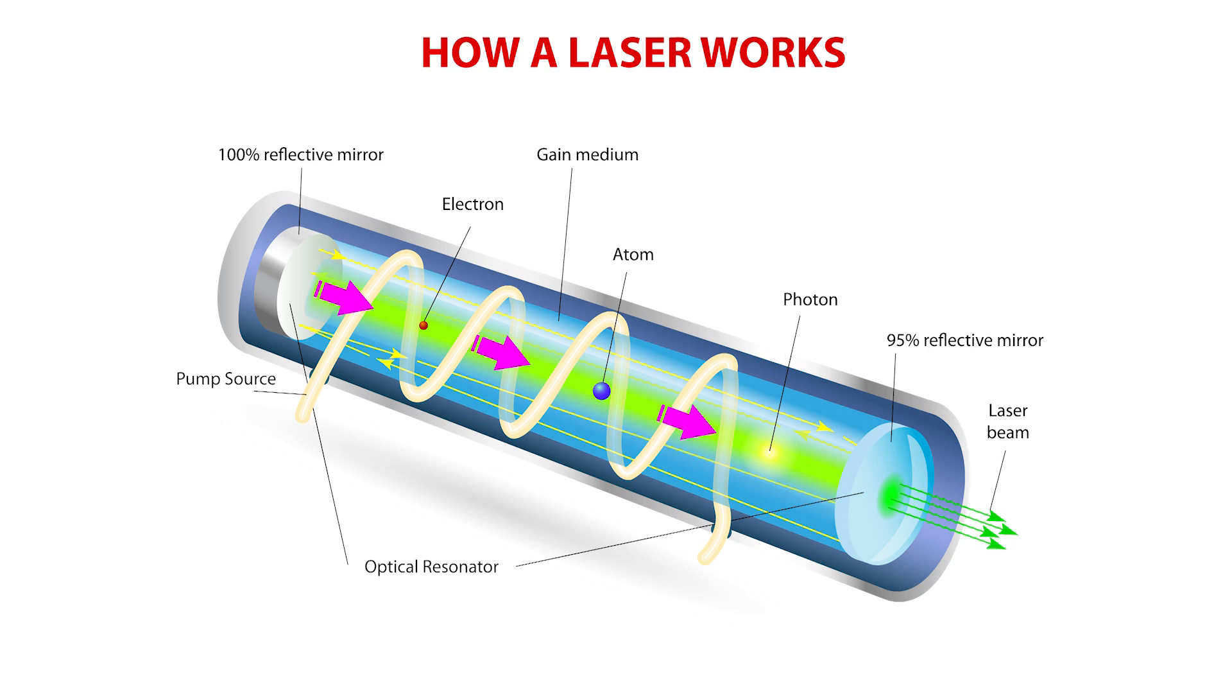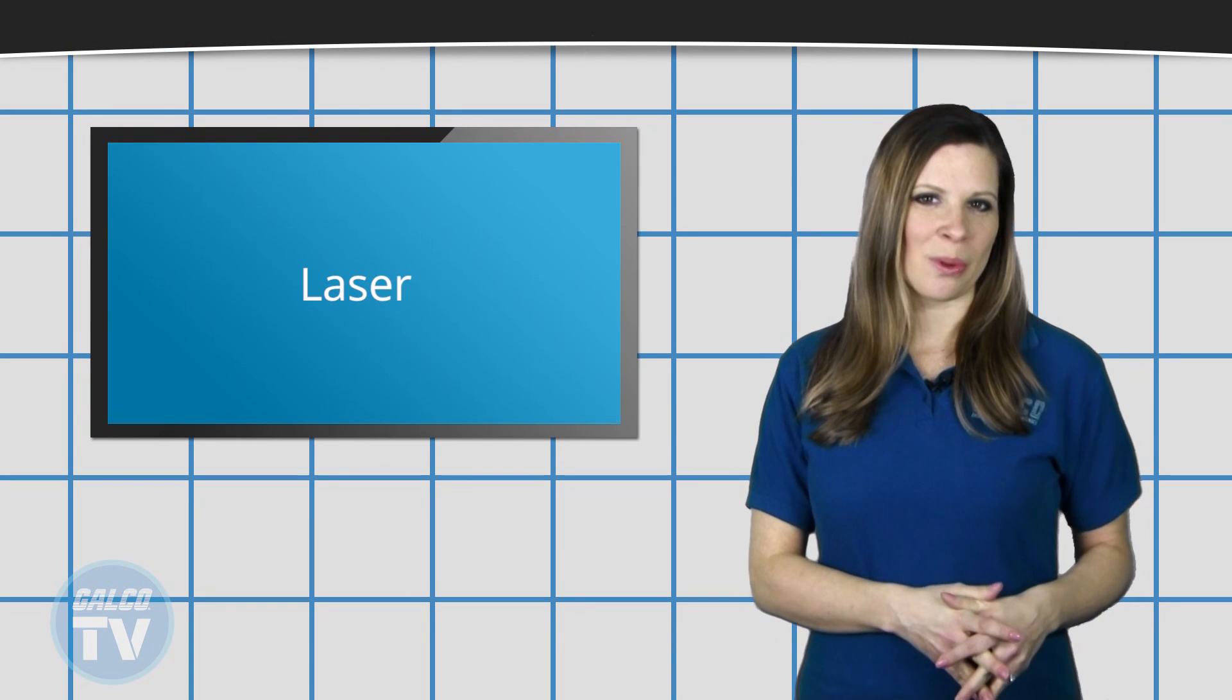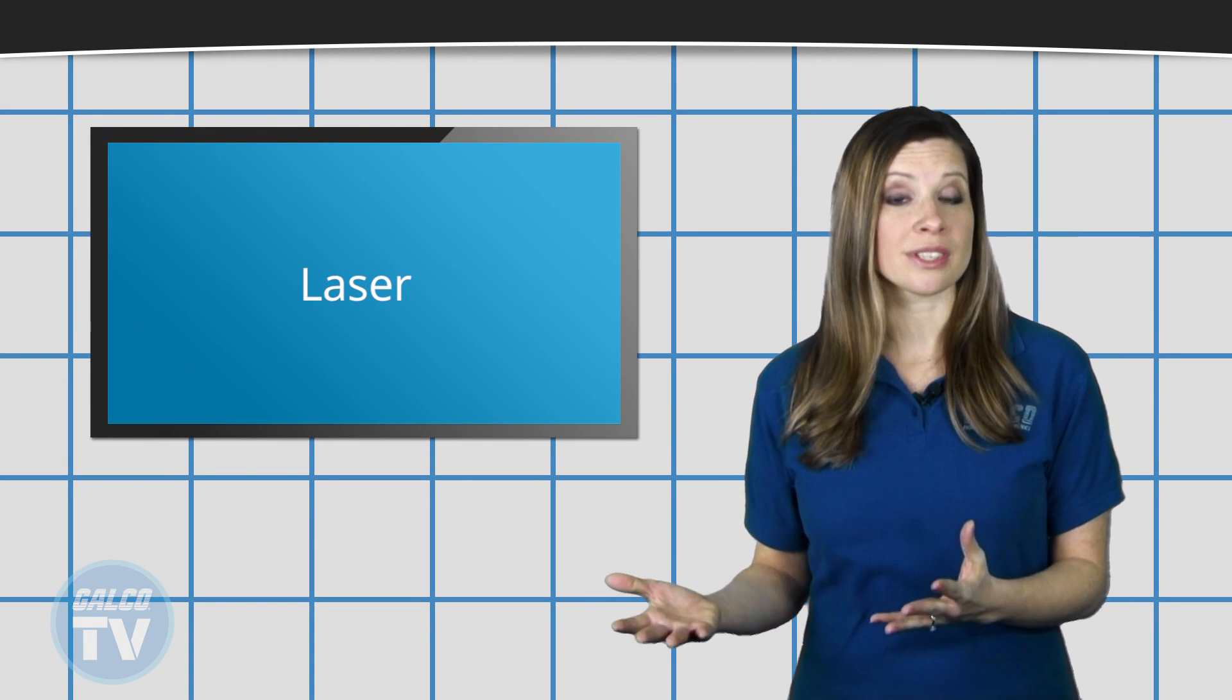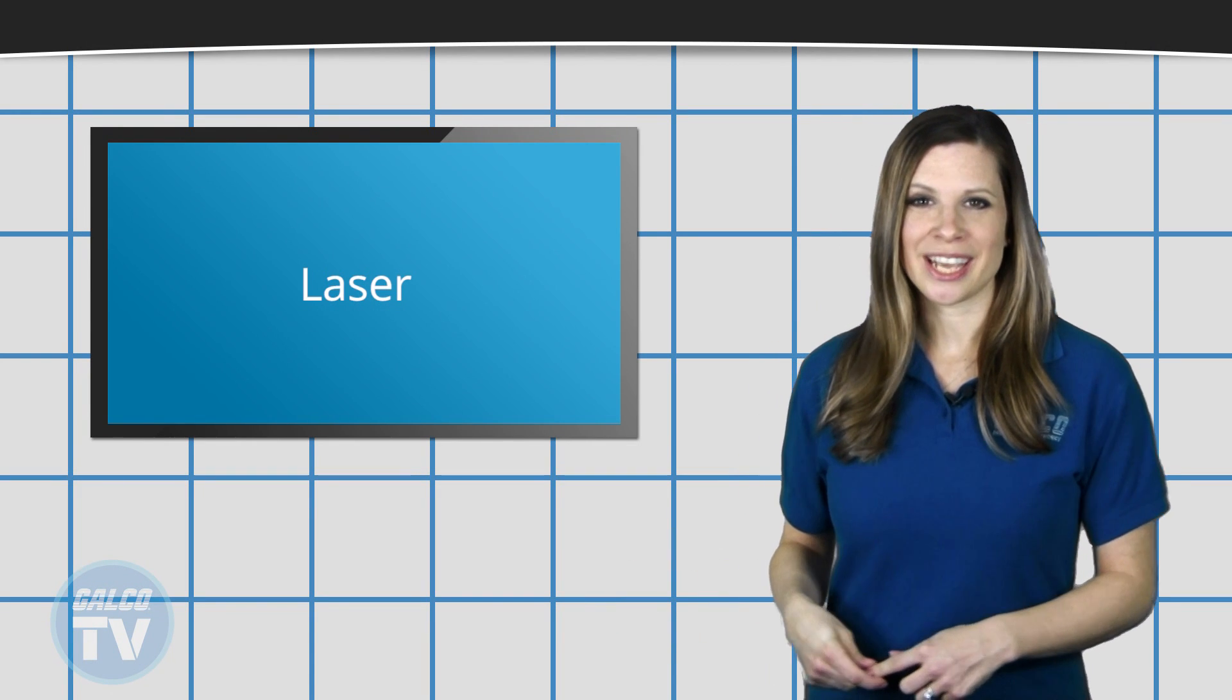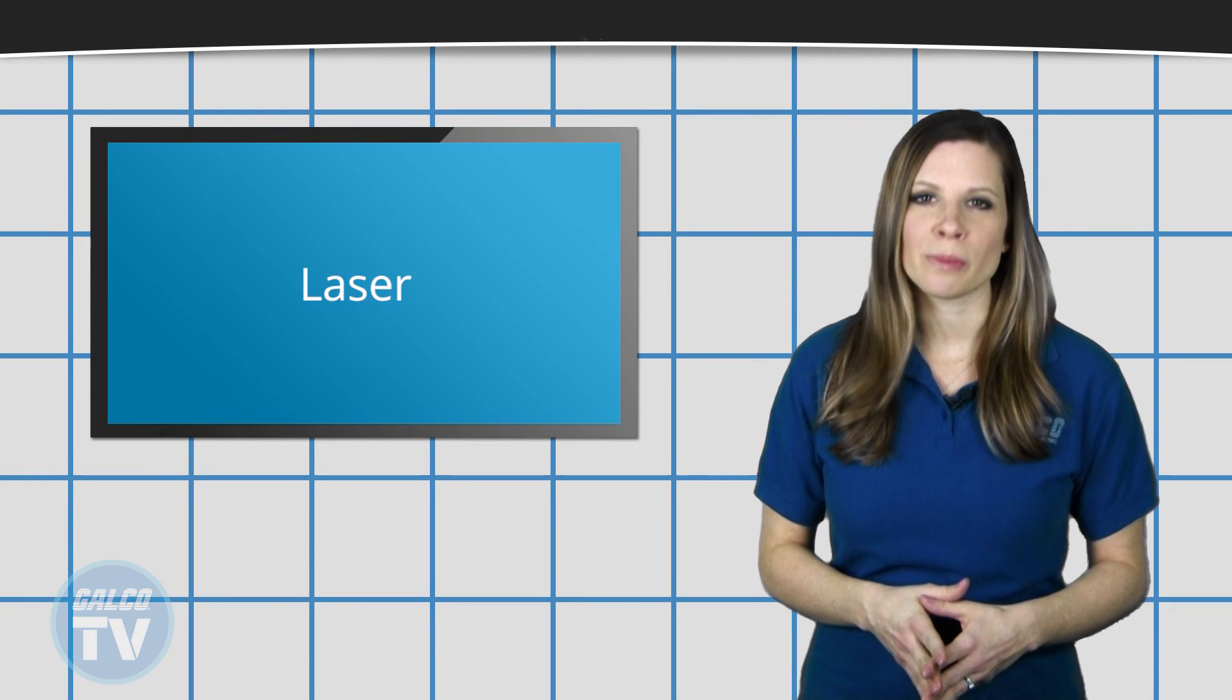Light from the gain medium is reflected by the mirrors back into the medium hundreds of times before exiting the cavity. Some lasers may employ additional combinations of mirrors, spinning mirrors, modulators, filters, and absorbers to alter the wavelength and properties of the laser produced.